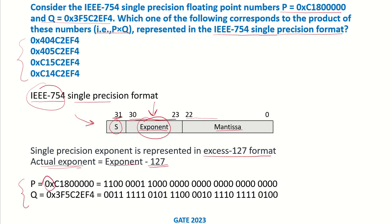0x signifies a hexadecimal representation. Breaking the first number into binary, we have C, 1, 8, and the remaining digits are 0s. For the second number we have 3, F, 5, C, 2, E, F, 4. These are the two numbers expressed in binary.